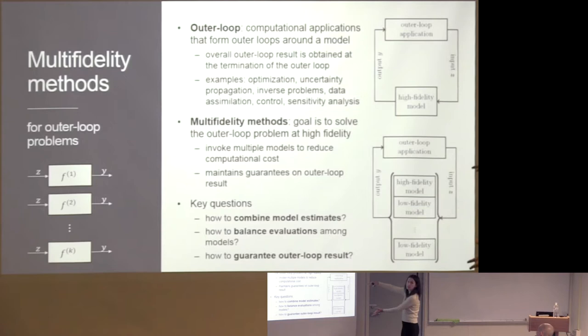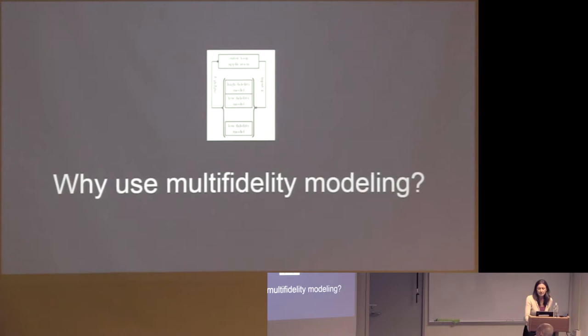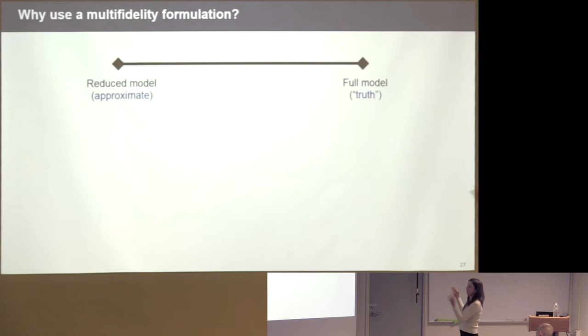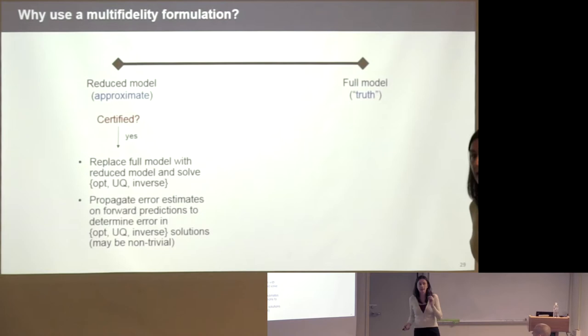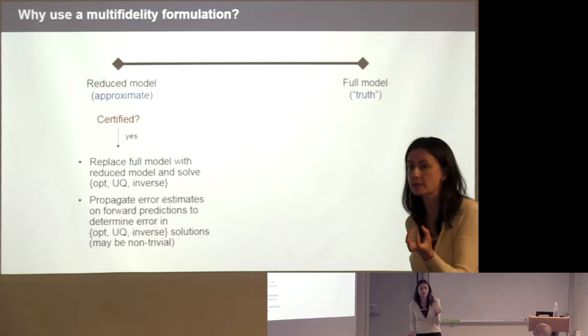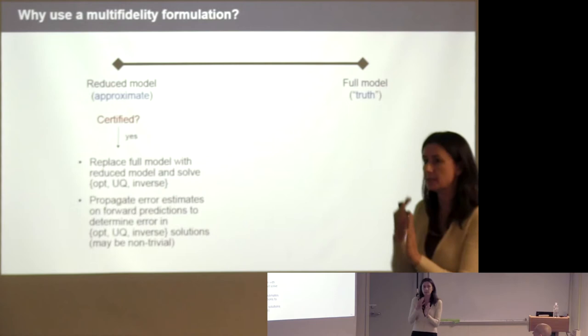With this setup there are key questions: if you're going to use K models, how do you combine the model estimates? How do you figure out which model to evaluate and when? And how do you provide guarantees on the outer-loop result? If a reduced model is certified — meaning for a given input, you can tell how good or bad it is — for linear PDEs with parameters entering in a certain way, there's a large portion of the community focused on this error estimation. If you can certify your model, great — you can propagate error estimates and confidently make decisions.